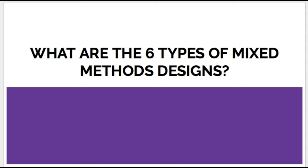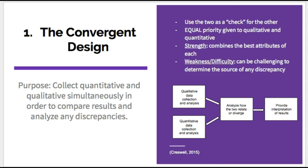The first is a convergent design. The purpose of a convergent design is to simultaneously collect both qualitative and quantitative data, merge the datasets, and then explain any discrepancies between the two. The idea here is that by collecting both, the weaknesses of each will be offset by the strengths of the other. In short, the quantitative data, also known as close-ended data, and the qualitative data, or open-ended data, can be used to check one another. For example, collecting statistics from a large group may help to offset the interviews that you only conducted with a few people.